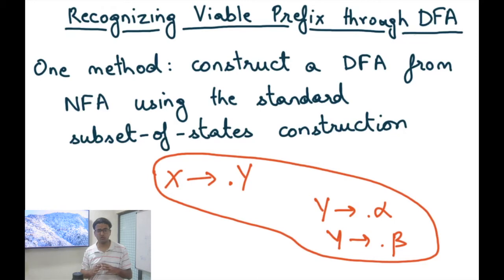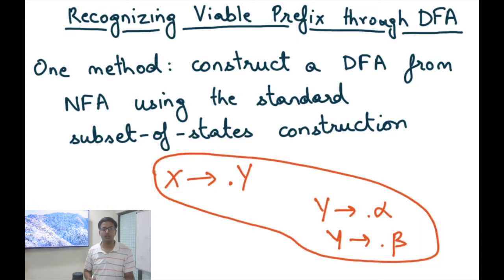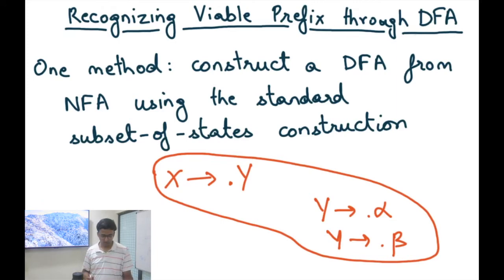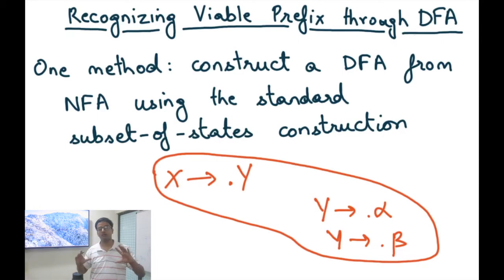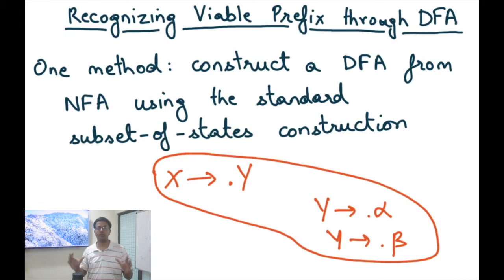The epsilon closure forms a DFA state. It helps to think of this automaton as a DFA, especially as we look at examples and implement the algorithm using pseudocode. In an NFA, we track a subset of states; in a DFA, we make a state for every possible subset of states, and then apply the standard subset-of-states construction for transitions as well.